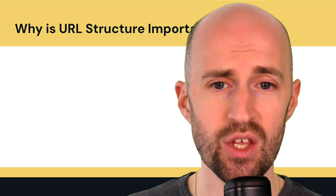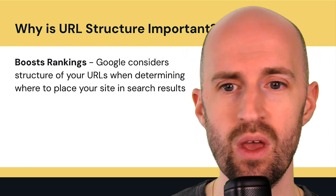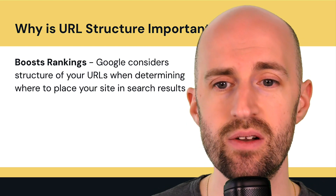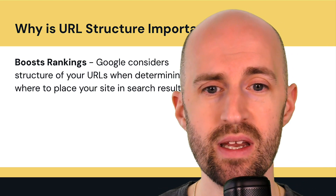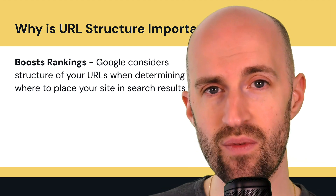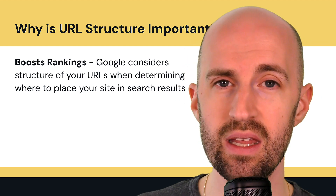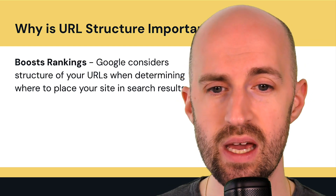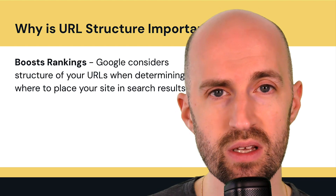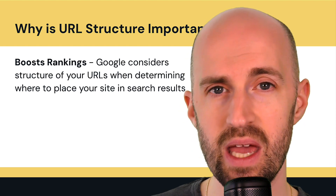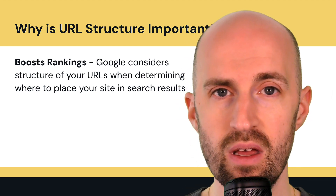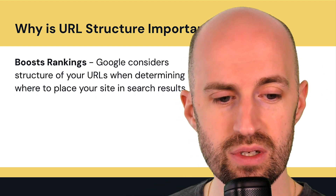So why is URL structure important for your SEO? Firstly, it helps boost rankings indirectly because Google considers the structure of your URLs when it determines where to place your site in search results. Google will look at it and say this is friendly, easy to understand, and the hierarchy and relationships between pages are clear. It can also help with user experience, and if users engage more with the site and pages, it will indirectly boost your rankings through behavior signals.